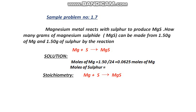Similarly, for sulfur: 1.50 gram of sulfur divided by molar mass of sulfur, which is 32 gram per mole. If you calculate this, the value you get is 0.0467 moles. So here we have converted the amount of magnesium and sulfur from grams into moles: 0.0625 moles of magnesium and 0.0467 moles of sulfur.